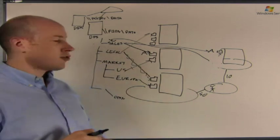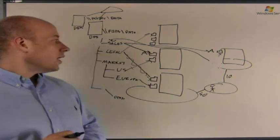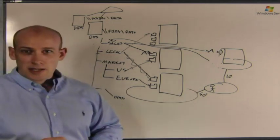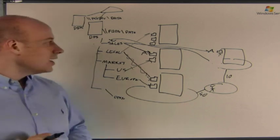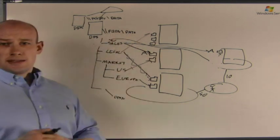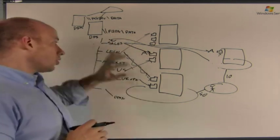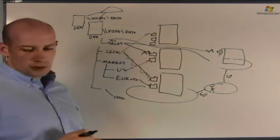In 2008 we also support access-based enumeration, which means we only see the content we actually have permissions to. So that's really DFS namespaces in a nutshell. It's just a logical namespace that points to physical shares.